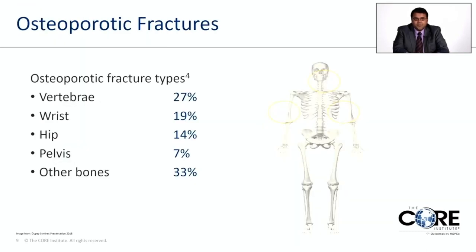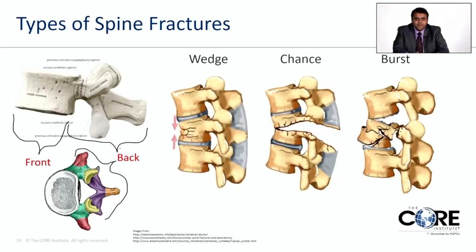When looking at osteoporotic fractures, 27% occur in the spine, 19% in the wrist, 14% in the hip, 7% in the pelvis, and approximately 33% in other bones. From here, the focus shifts to spine fractures specifically.